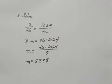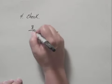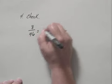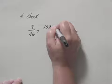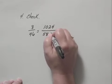To check, we can substitute in the proportion and check cross products. We have the proportion 8 to 46 equals 1024 to M, and now we say M is 5,888.